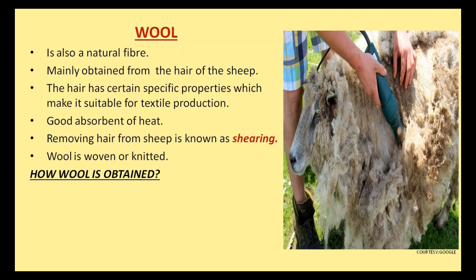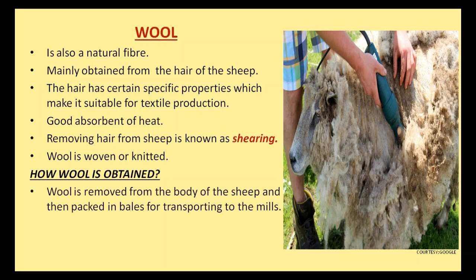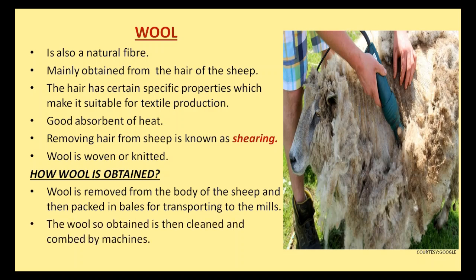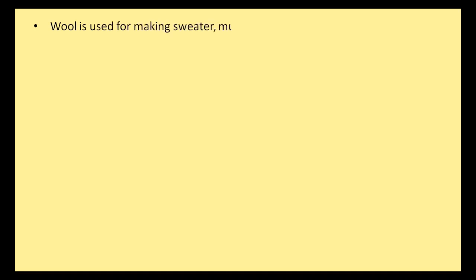How is wool obtained? Wool is removed from the body of the sheep and then packed in bales for transporting to the mills. The wool so obtained is then cleaned and combed by machines. Wool is used for making sweaters, mufflers, shawls, scarves, etc.